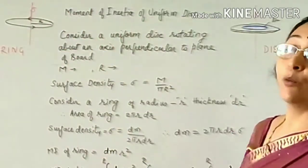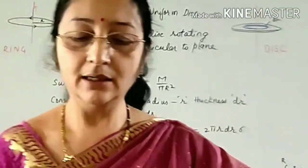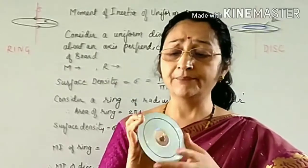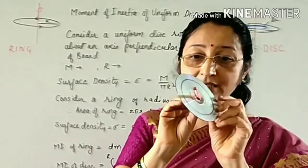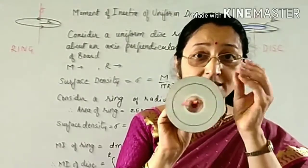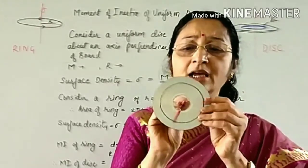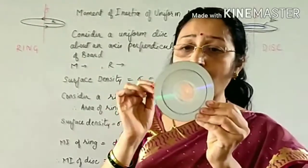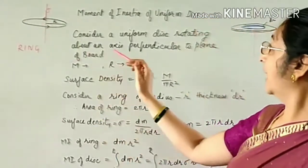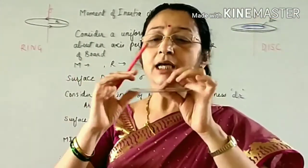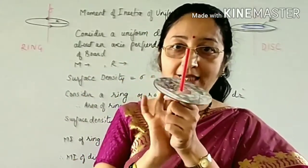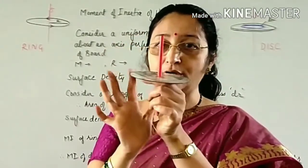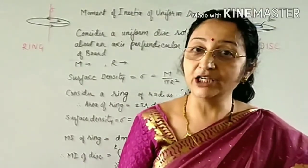Now we are going to find the moment of inertia of a uniform disc. We want to find the moment of inertia of this disc when it rotates about a transverse axis passing through its center — that is, an axis perpendicular to its plane. The disc is two-dimensional; its thickness is very small. Let M be the mass of the disc and R be its radius.